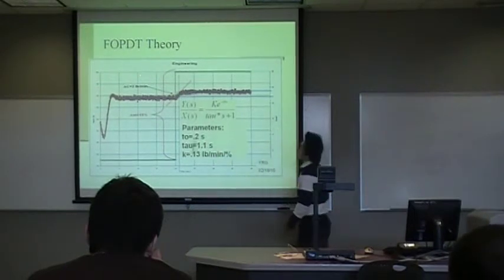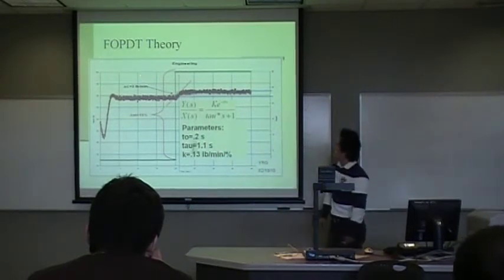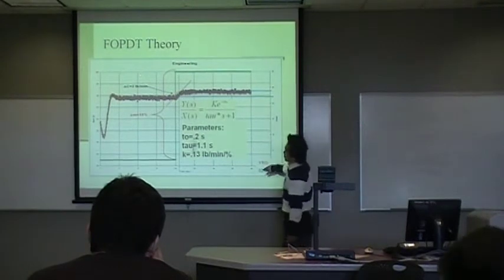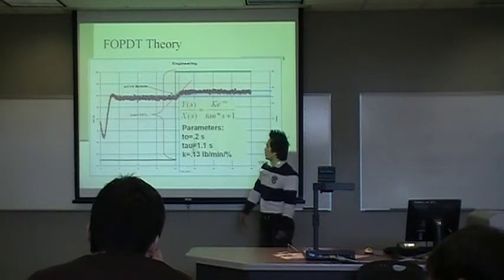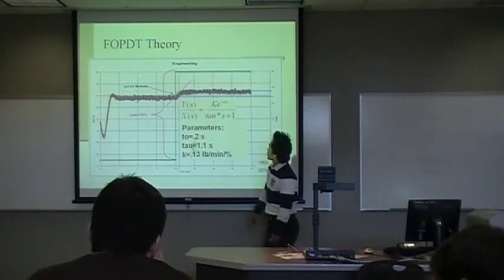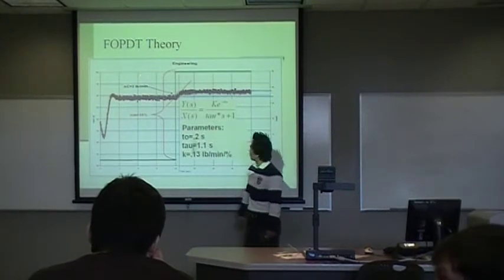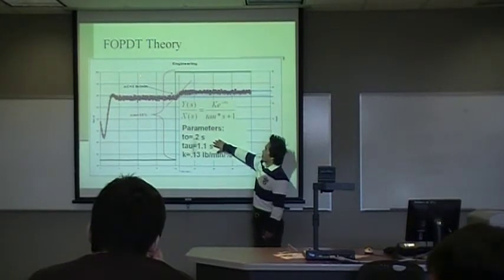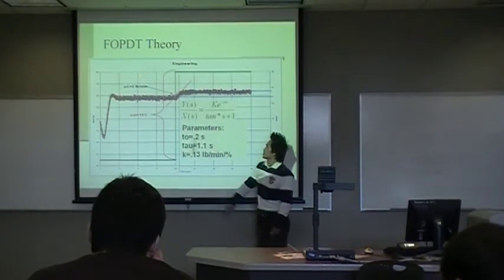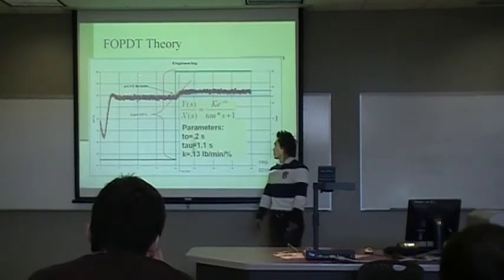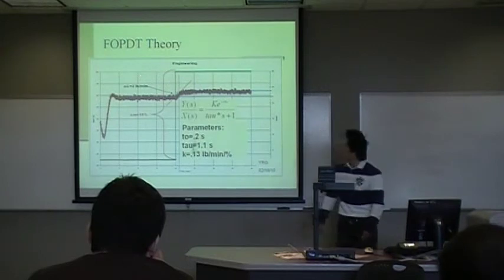We use the IPOM method to find those parameters. In this graph we have input 85% with an increase of 50%, and we use the IPOM method to find T0 is 0.2 seconds, Tau is 1.1 seconds, and K is 0.13 count per minute per percent.